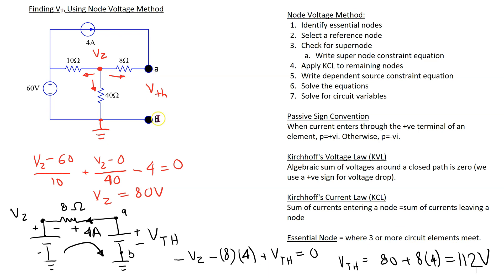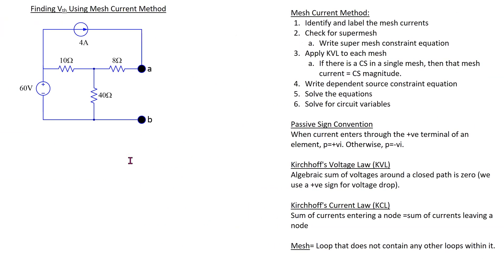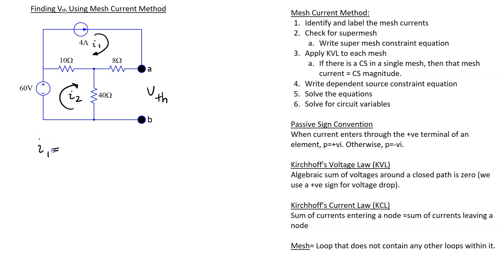We can also use the mesh current method to find the Thevenin voltage. Again we remove the load resistor and find the open circuit voltage V_Thevenin. This circuit has two meshes. We assign direction I1 and direction I2. The independent current source is present only in mesh I1, so I1 equals 4 amps, since mesh I1 flows in the same direction as the current source.